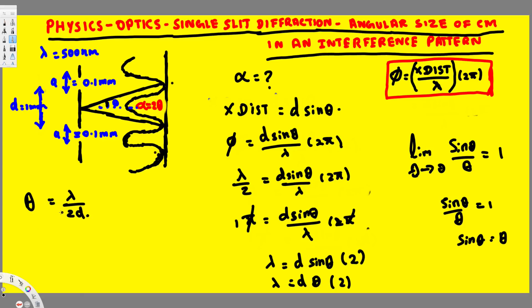And we know that if this is this, we know that alpha is equal to 2 theta. Therefore this is 2 times lambda by 2d. From this one, 2 and 2 cancels. So alpha is equal to lambda by d.